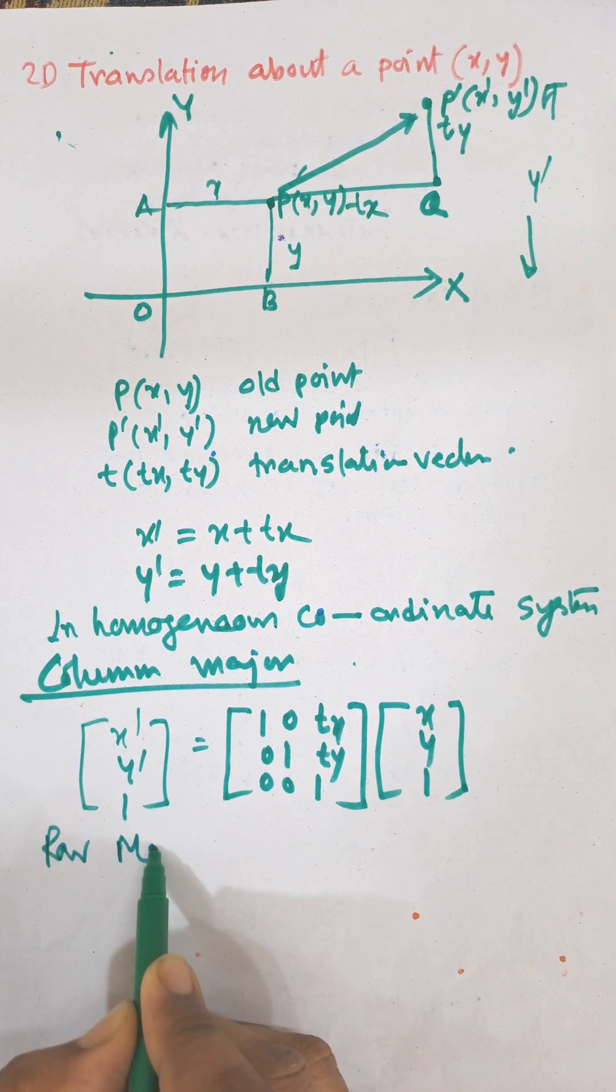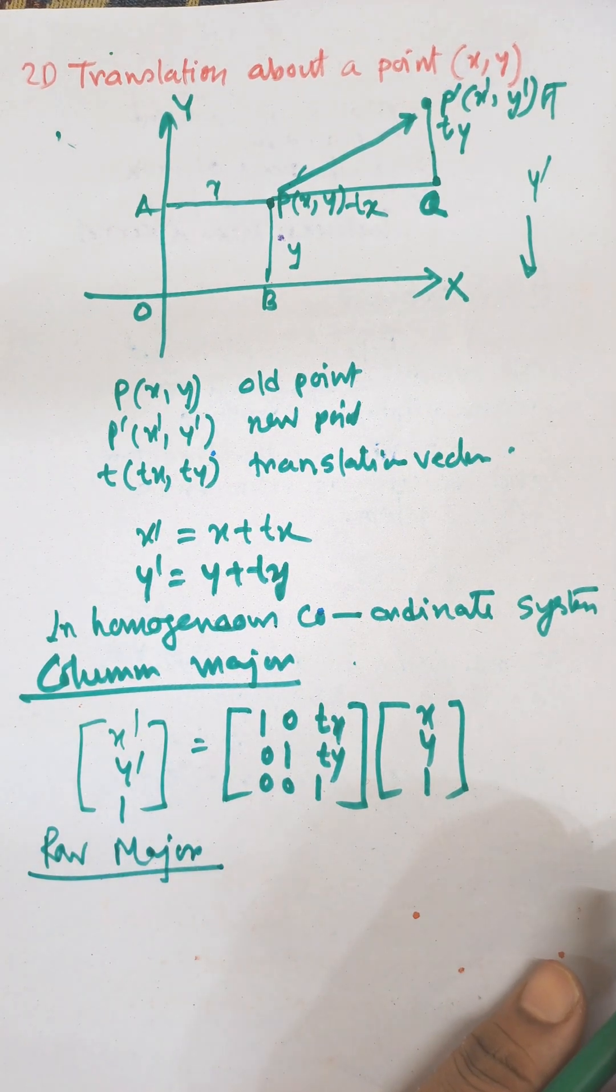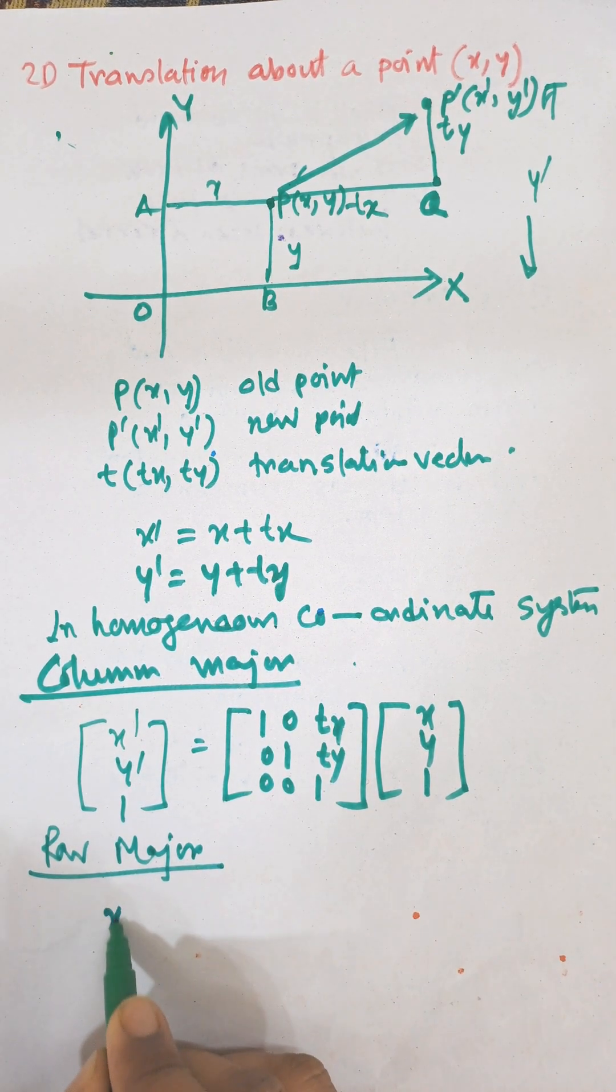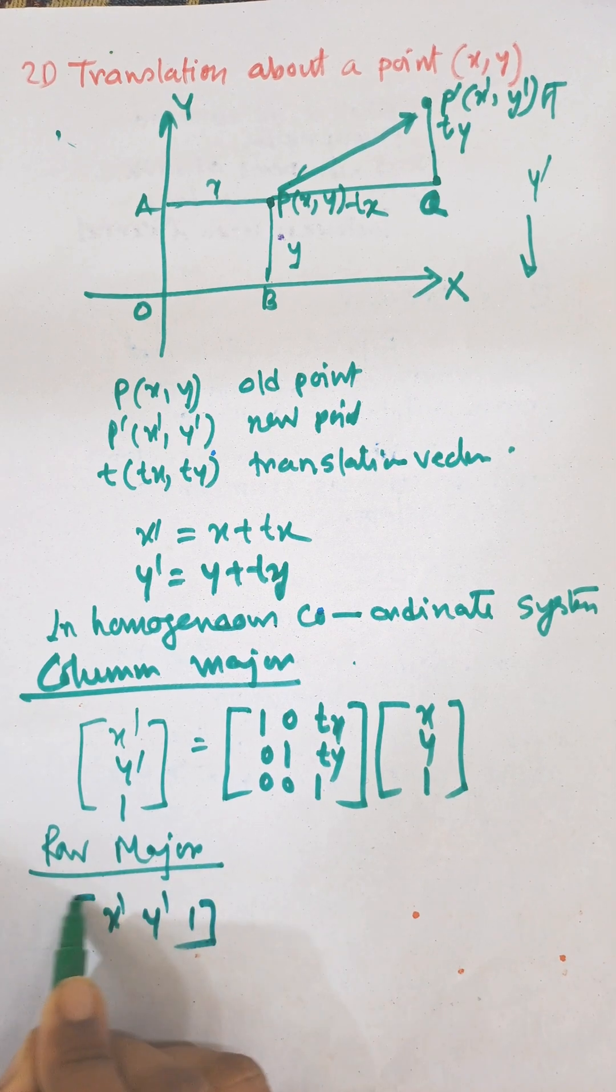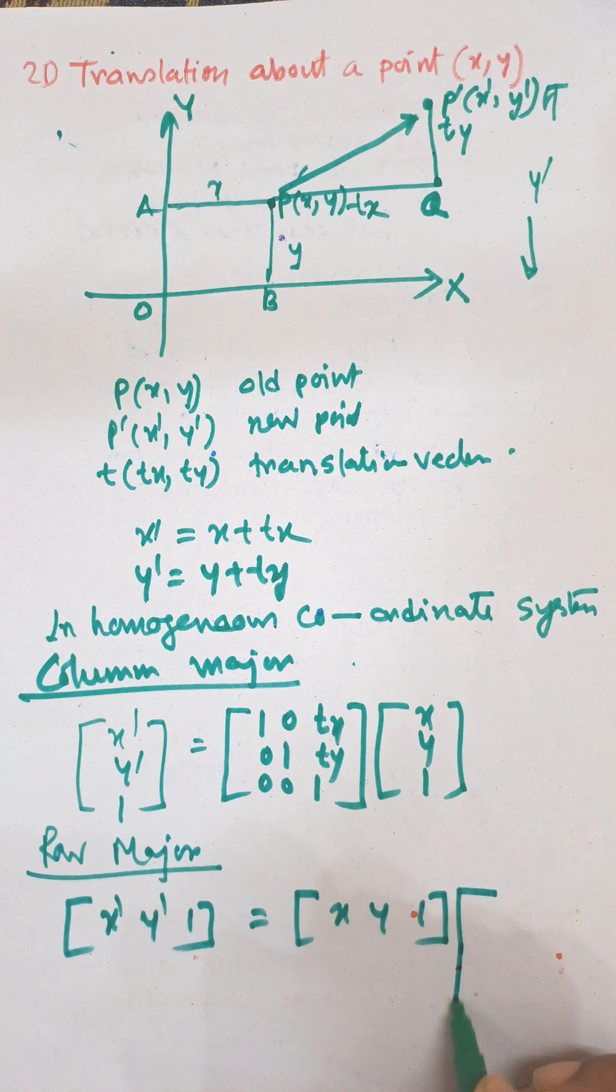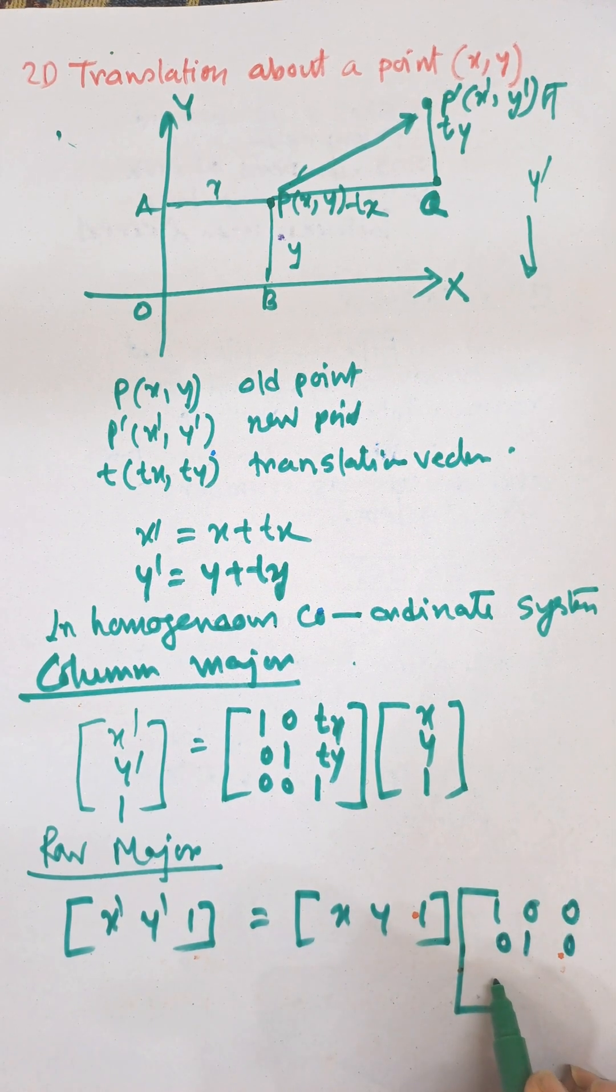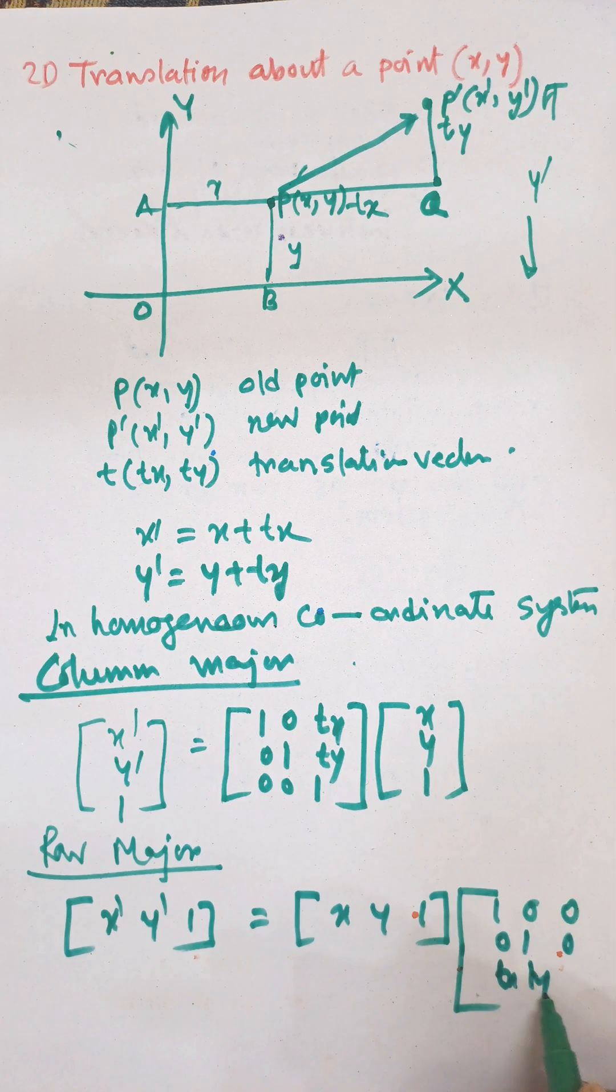Now the row matrix for 2D translation about the point is: [x', y', 1] = [x, y, 1] × [1, 0, 0; 0, 1, 0; tx, ty, 1].